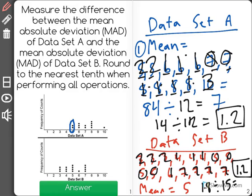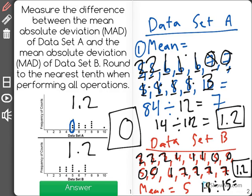Now it says to find the difference between those. Well, data set A has an MAD of 1.2, as does data set B, so there is no difference between these two. They actually vary the exact same amount because they have the same mean absolute deviation.